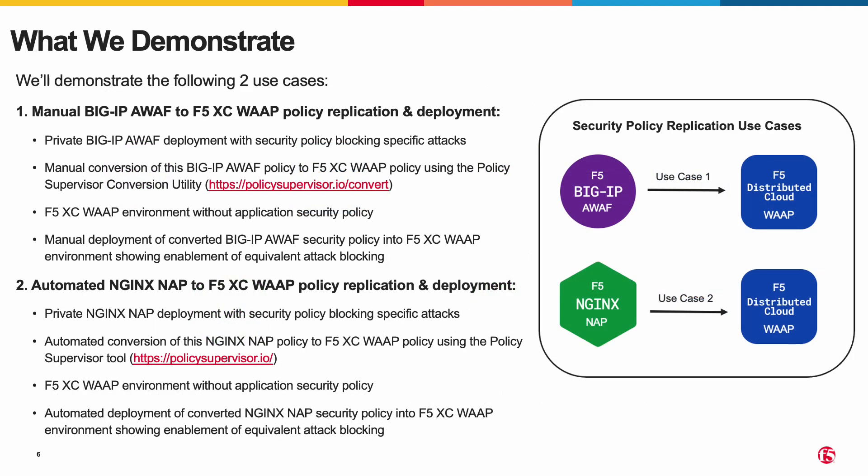Use Case 1: Manual BigIP Advanced WAF to F5 Distributed Cloud WAF Policy Replication and Deployment. We'll show a private BigIP AWAF deployment with a security policy blocking specific attacks, followed by a manual conversion of this BigIP AWAF policy to an F5 Distributed Cloud WAF policy using the Policy Supervisor Conversion Utility. We'll show an F5 Distributed Cloud WAF environment without an application security policy, then show a manual deployment of the converted policy demonstrating enablement of an equivalent attack blocking capability.